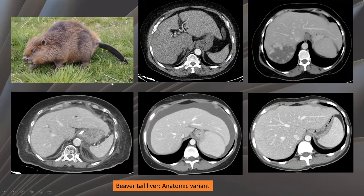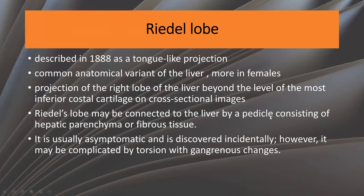Here we see the beaver-tailed liver in multiple examples with lateral extension of the left lobe. It was described in 1888 as a tongue-like projection, and it is more common in females. This tongue-like projection extends beyond the inferior costal cartilage on cross-sectional imaging. It should not be confused with a mass lesion, and can rarely be complicated by torsion with gangrenous changes, but is usually asymptomatic and discovered incidentally.